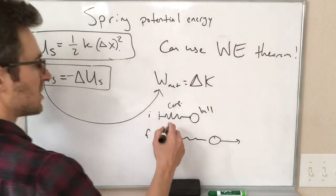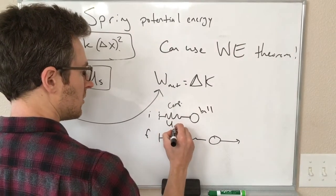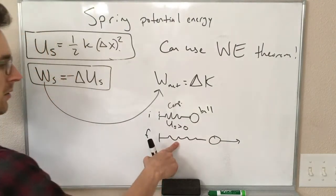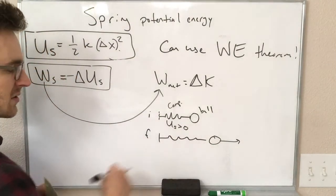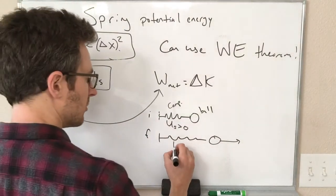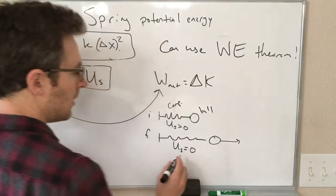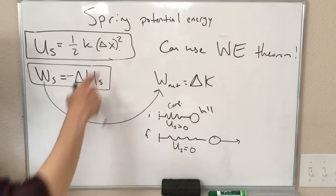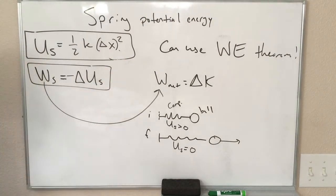Here, we have some potential energy stored in the spring. U_s is greater than zero. Here, our spring is, if it's done pushing, it's at its equilibrium length. So there is no energy stored in the spring anymore. If it's at its equilibrium length, delta x equals zero, and so U_s equals zero.